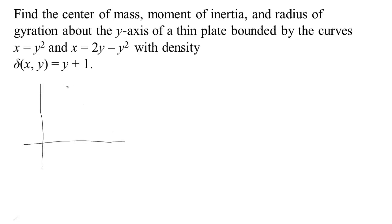This first parabola, x equals y squared: when y equals 1, x equals 1; when y equals 0, x equals 0; when y equals negative 1, x equals 1 again. So we have a parabola something like this — imagine a little bit more curvature to it.